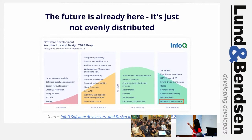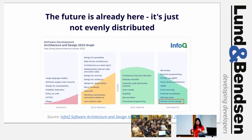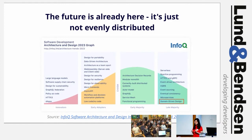This is an architecture and design trends graph. An architecture and design trend would first attract some innovators, then more people join as early adopters. Then the trend either crosses the chasm or dies out as a fad. If it crosses the chasm, it becomes early majority and then matures into late majority. When something is in late majority, it should feel a little like electricity — you don't notice when it's there, but you notice when it's not, like a power outage.